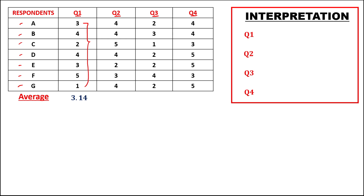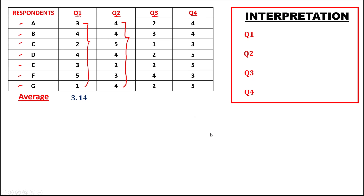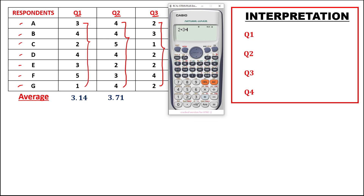For question number 2, to find the average, we have 4 + 4 + 4 + 5 + 4 + 2 + 3 + 4, then divide by 7, so the average is 3.71. Then for question number 3, to find the average, we have 3 + 1 + 2 + 2 + 2 + 4 + 2, then divide by 7, so the average is 2.29.